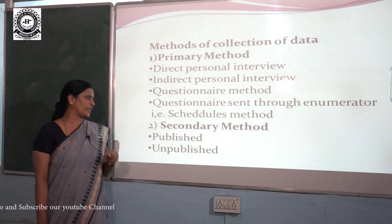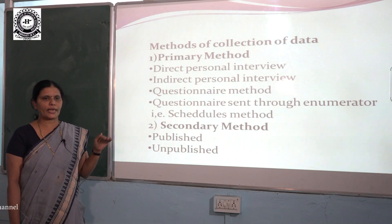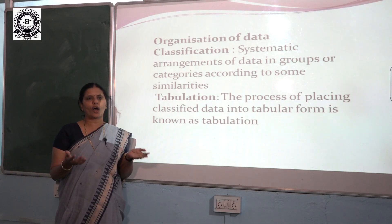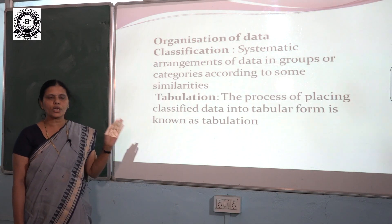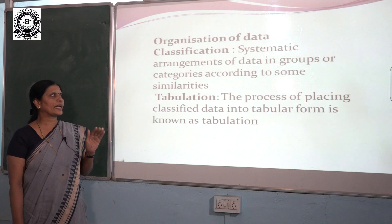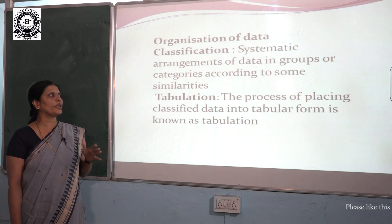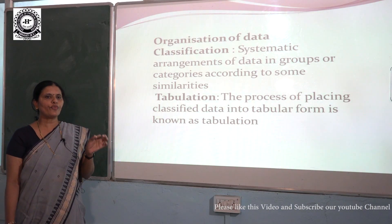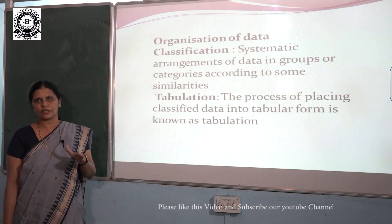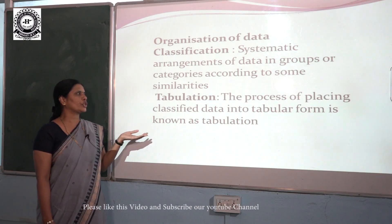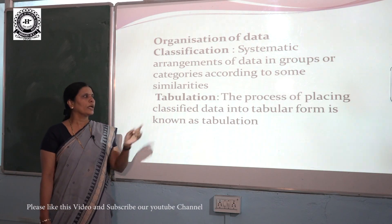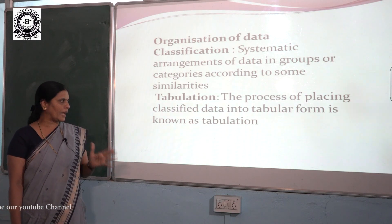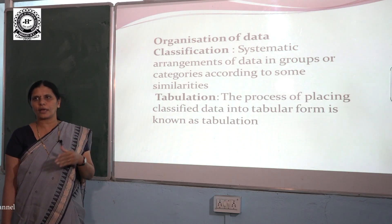In the secondary method, we collect data from published and unpublished sources. After collecting data, we organize it using classification or tabulation. Classification is the systematic arrangement of collected data into groups or categories according to similarities — for example, classifying students into male and female. After classification, we tabulate the data, which means placing classified data into tabular form — a systematic arrangement of data in rows and columns.